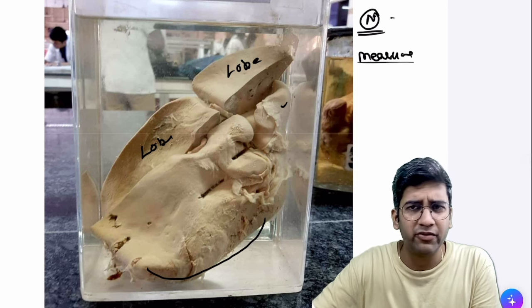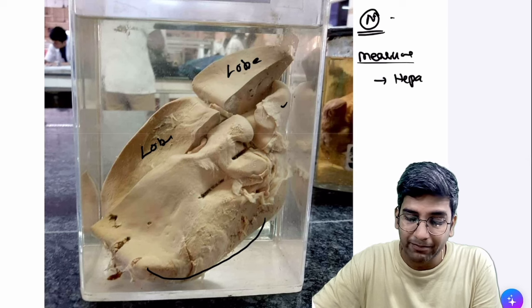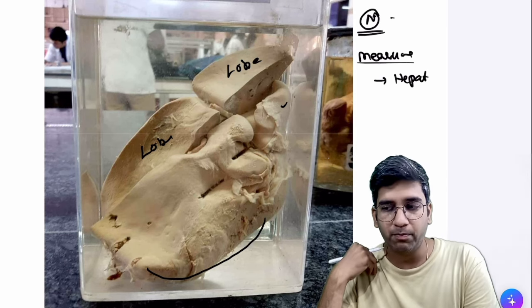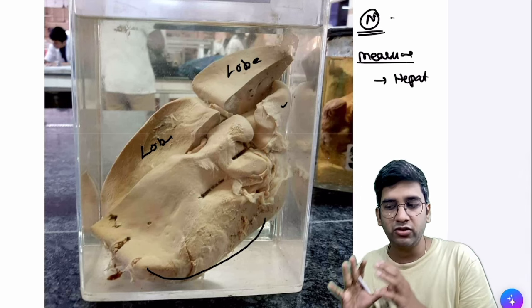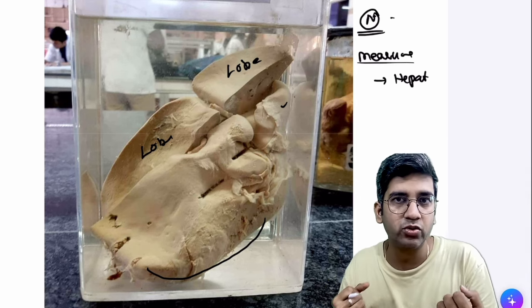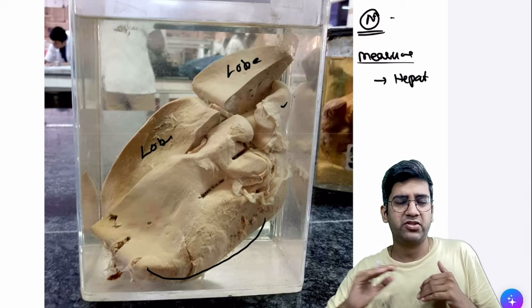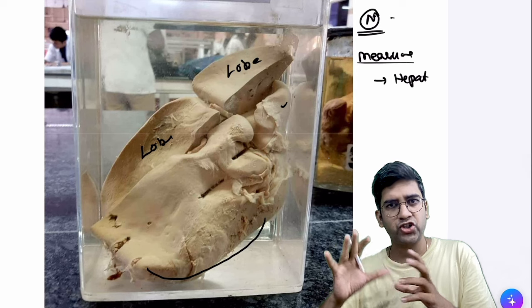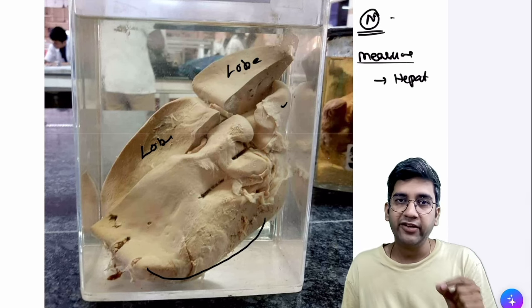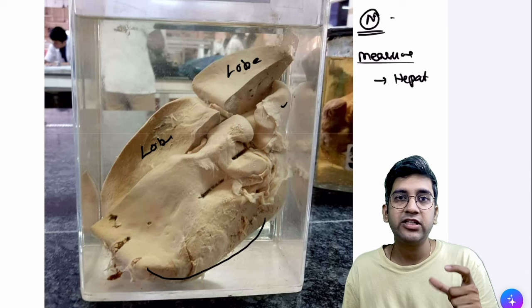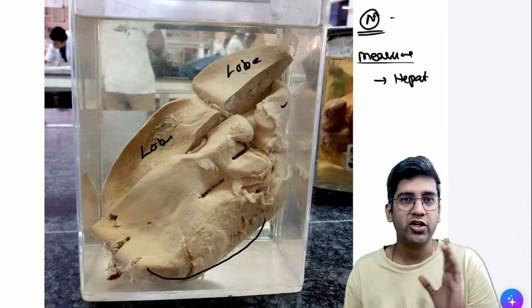The measurement need not be perfect — just approximate — and then you can state that this is hepatomegaly. This gives you talking points for at least two to three minutes so the examiner understands you really know what you're talking about. Based on the approximate size dimensions and presuming this is from an adult, I feel this liver is much more enlarged than normal, so I think of hepatomegaly.